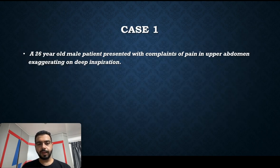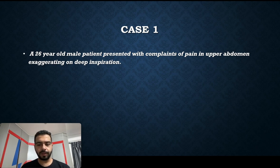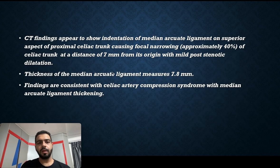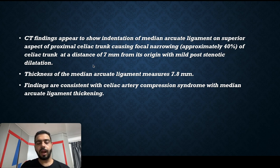The first case is a 26-year-old male patient who presented with complaints of pain in the upper abdomen exaggerating on deep inspiration. He was taken for CCT abdomen and pelvis. On the sagittal and axial sections, we can see thickening of the median arcuate ligament with a thickness of 7.8 mm, causing compression and indentation of the proximal celiac trunk approximately 40% at a distance of 7 mm from its origin, with mild post-stenotic dilatation.